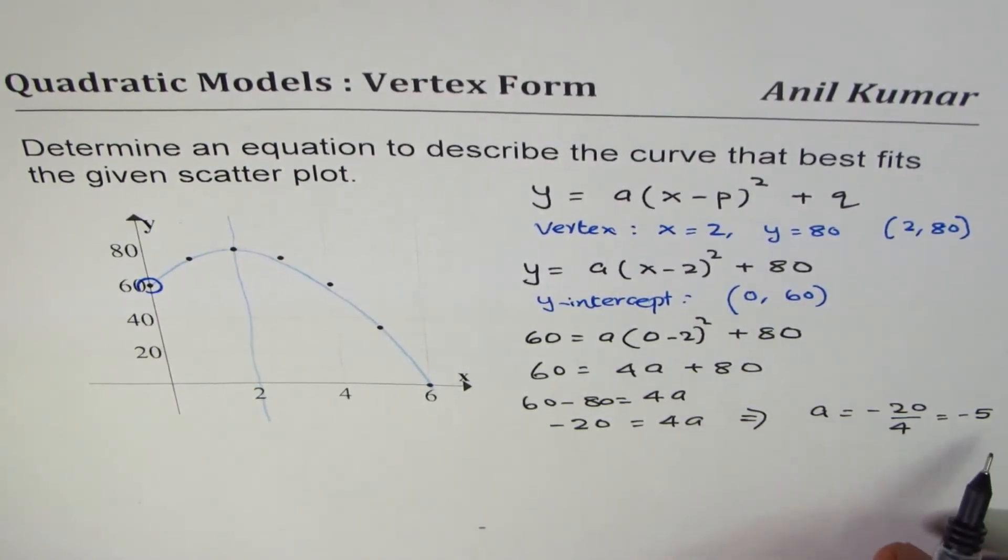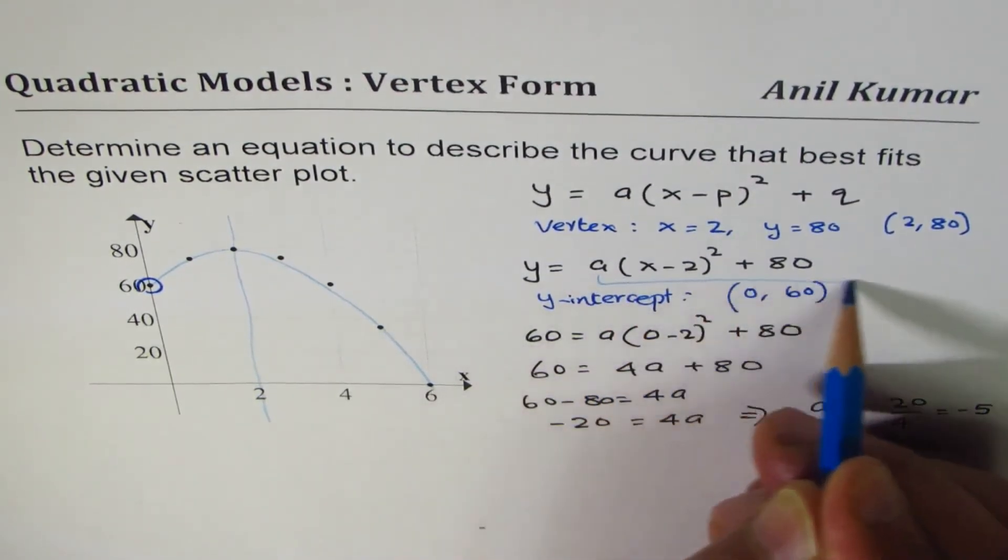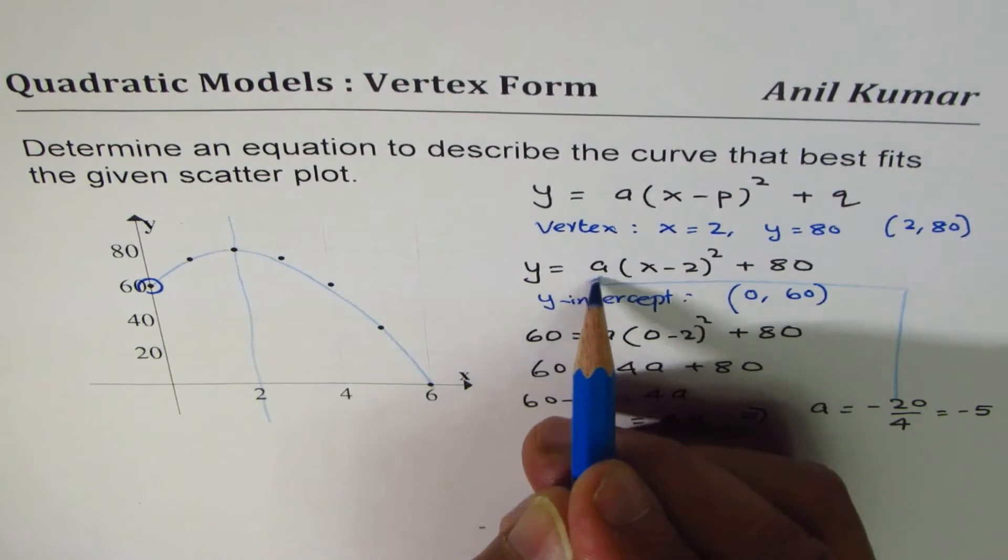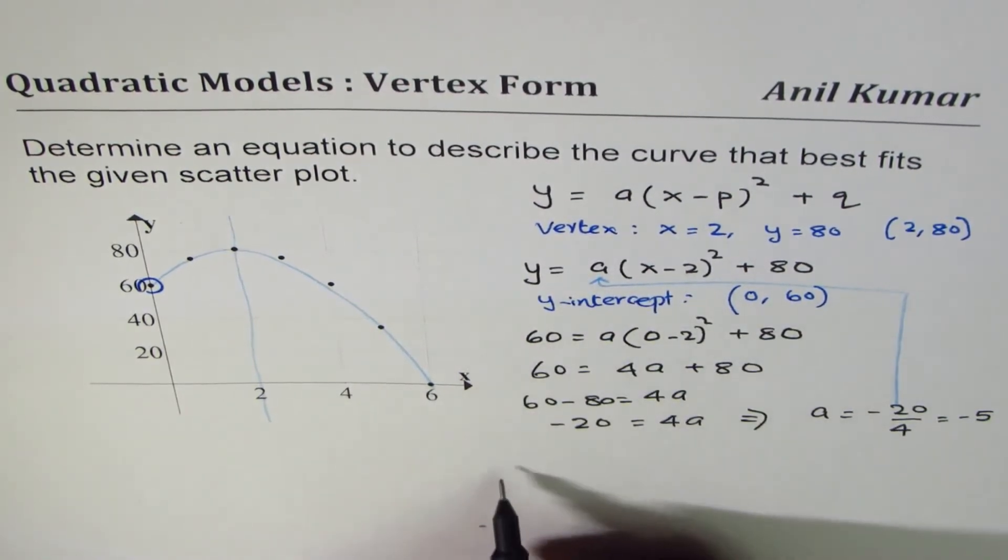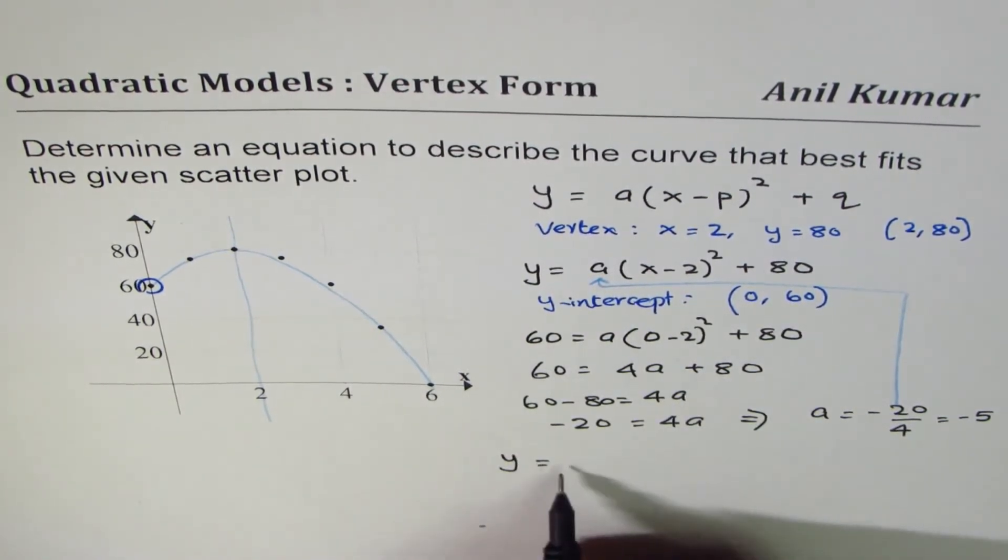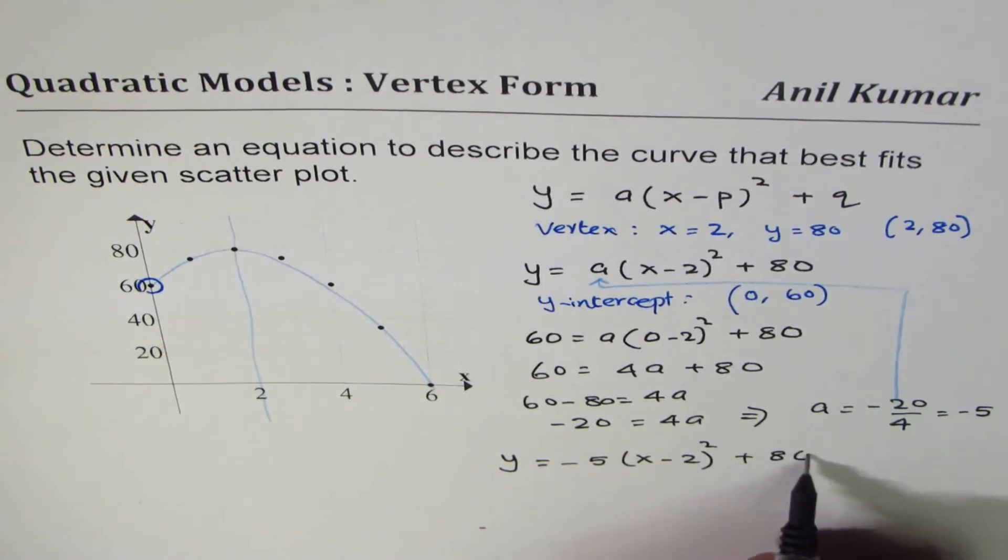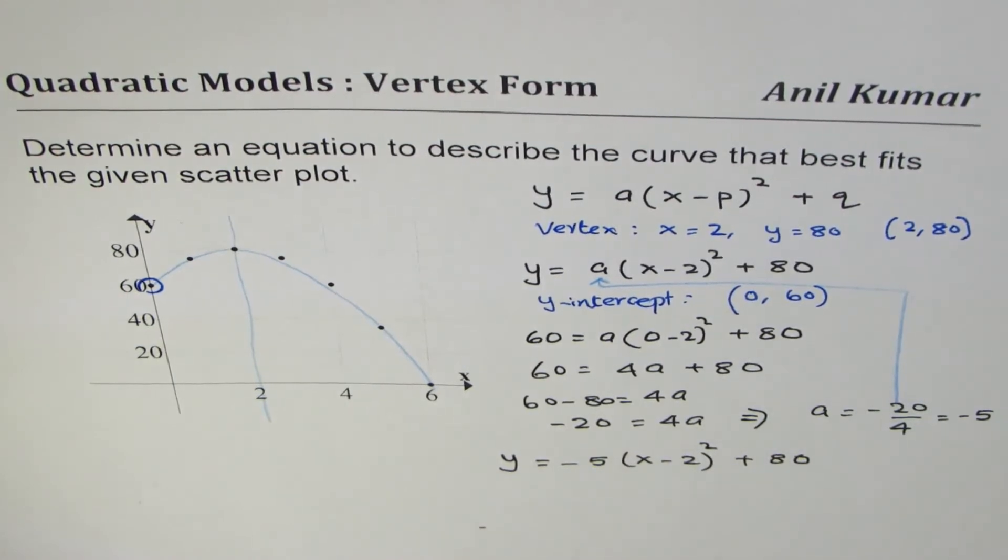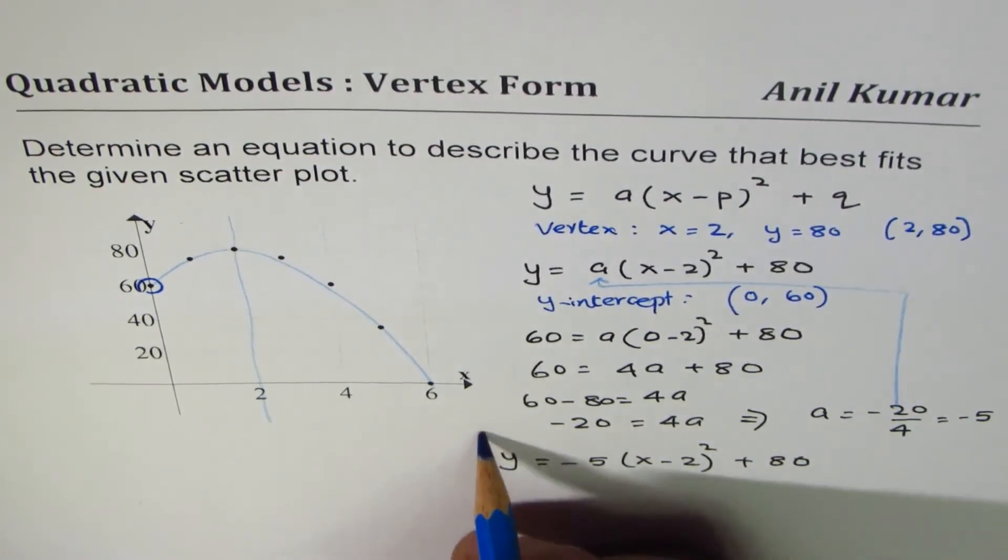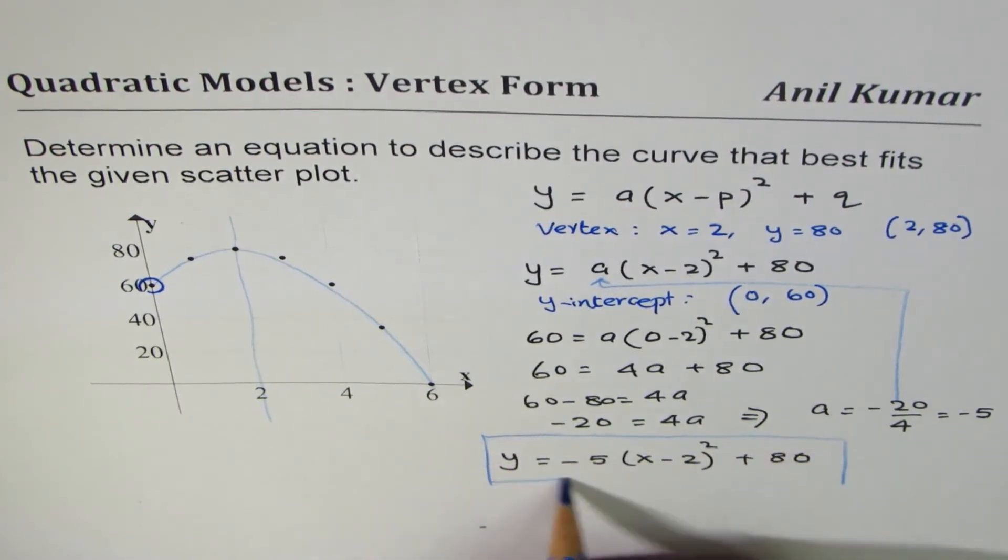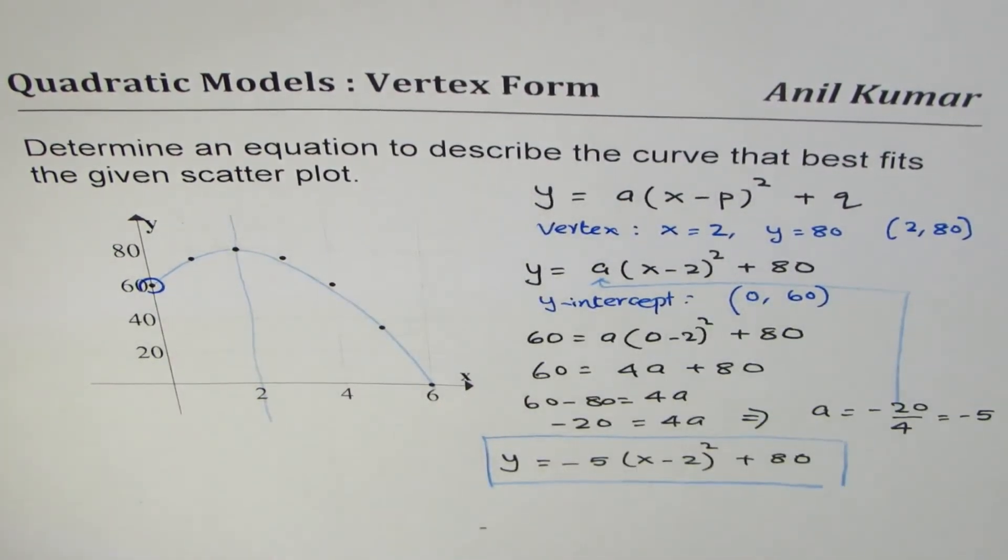So if a is minus 5, I can substitute this value of a in the general form of the equation and rewrite the equation as y equals to minus 5(x minus 2) whole square plus 80. So that becomes the equation in vertex form.